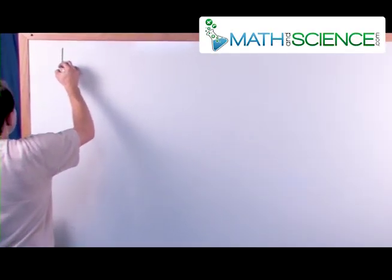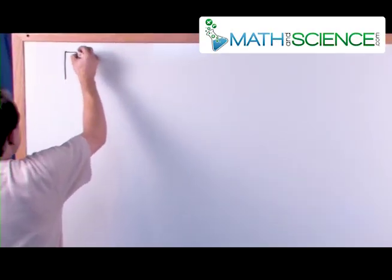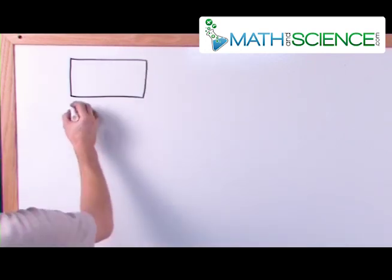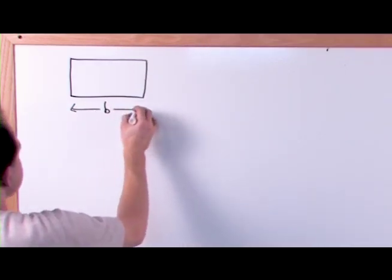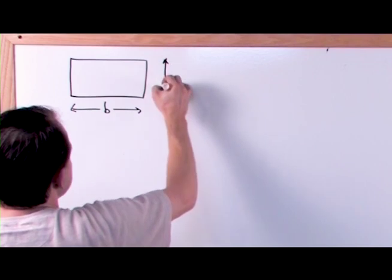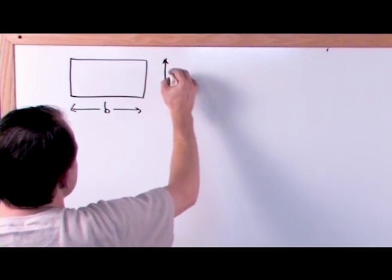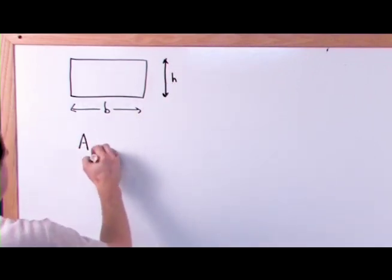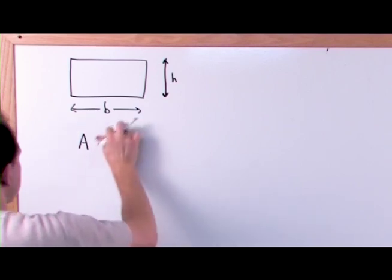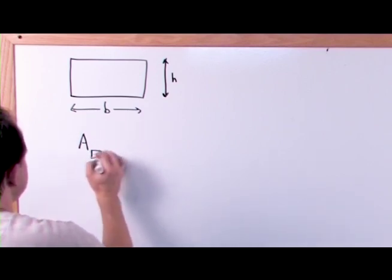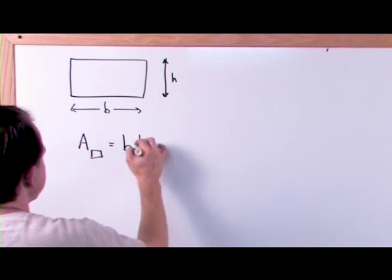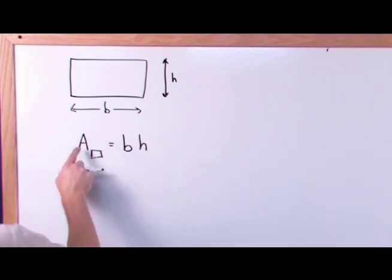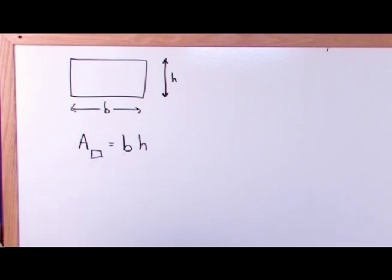Let's look at a rectangle, because that's what we already know. This is a rectangle, and it has a base and a height. You already know that the area of a rectangle is equal to the base times the height. This little symbol here just means it's a rectangle, so the area of the rectangle is base times height — you already know this.